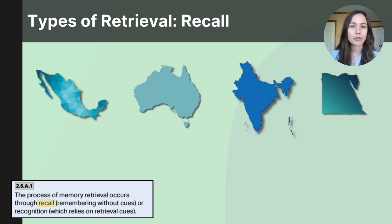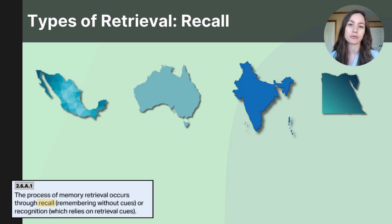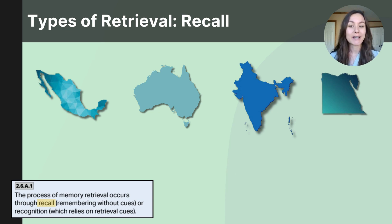The College Board wants AP psychology students to be familiar with two forms of retrieval: recall and recognition. Let's do a quick test to demonstrate these two retrieval methods.